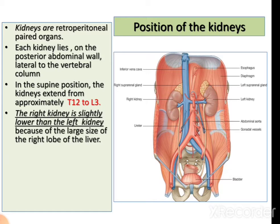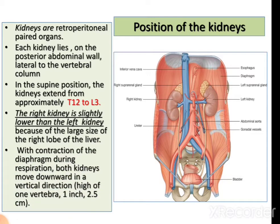T means thoracic vertebrae and L means lumbar vertebrae. The right kidney is slightly lower than the left kidney because on the right side we have the liver, which is of large size. With contraction of the diaphragm during respiration, both kidneys move downward in a vertical direction by one height of vertebra, that is 1 inch or 2.5 cm.